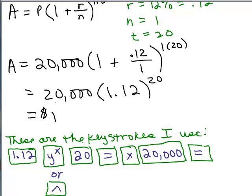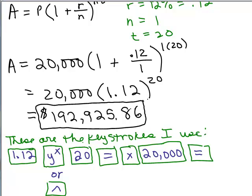And when I do that, I get this number rounded to the nearest cent: $192,925.86. That is a huge difference than when we did the simple interest formula. And I'm going to remind you, this is how much money is in the account after 20 years. So you put in 20,000, you let it sit there for 20 years, you've got $192,925 in your account. Simple interest you'd only had $68,000. It's really amazing.